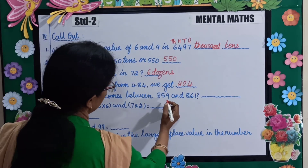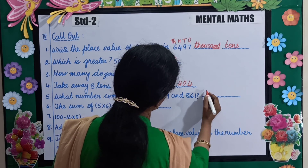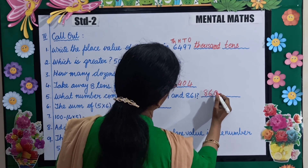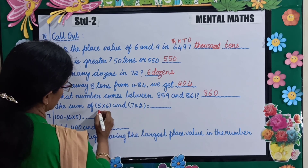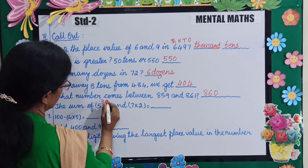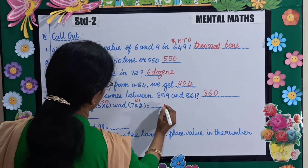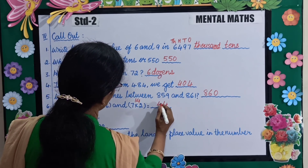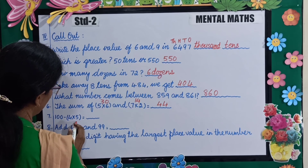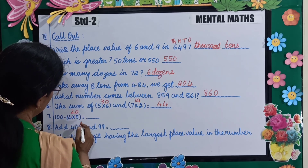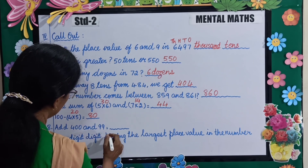The sum of 5 multiplied by 6 and 7 multiplied by 2: 5 times 6 is 30, and 7 times 2 is 14. Total is 44. Next: 100 minus 4 multiplied by 5. 4 fives are 20, subtract 20 from 100, the answer is 80. Add 499.